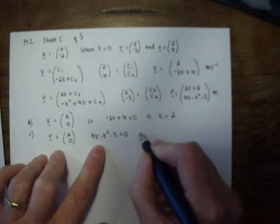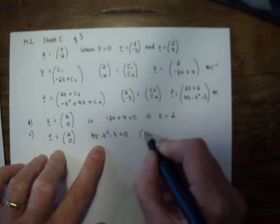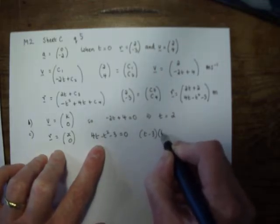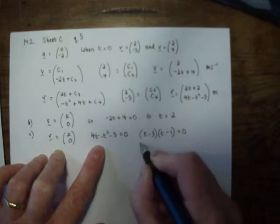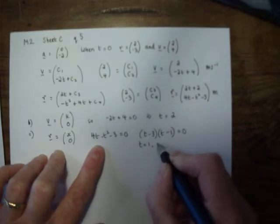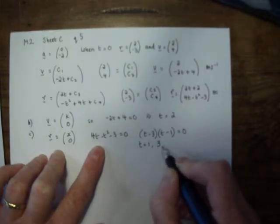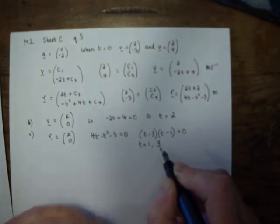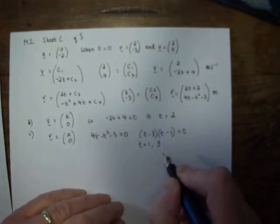Multiply through by minus 1, tidy it up, and you end up with that. And so when t is 1 and when t is 3, there are two times for which the particle crosses the x axis.